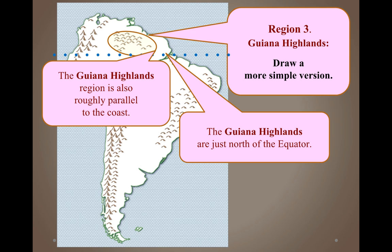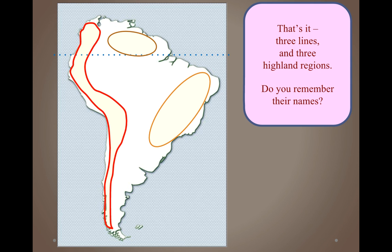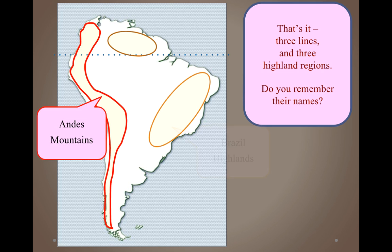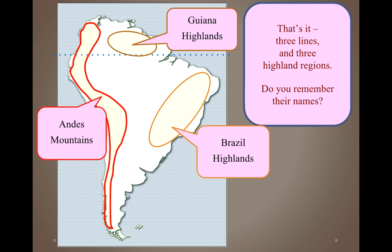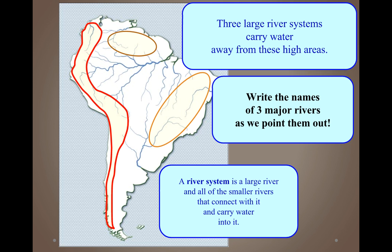These highland regions are all roughly parallel to the coastal areas of South America. You should now have all three drawn on your map. The three highland regions to remember are: the Andes Mountains, the Brazil Highlands, and the Guiana Highlands.